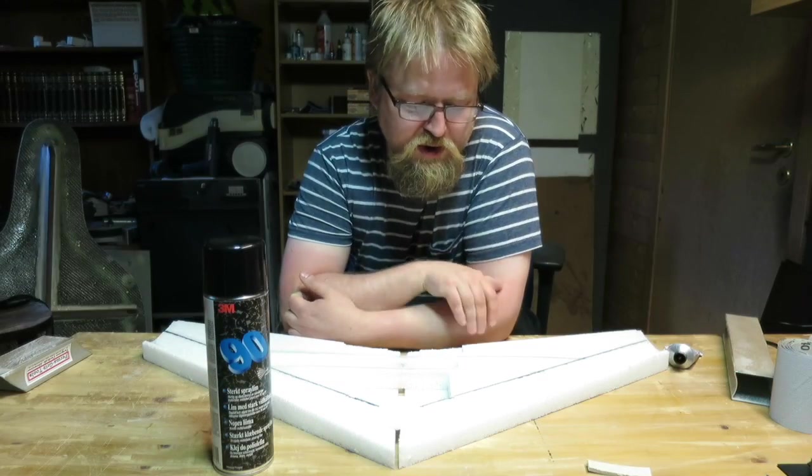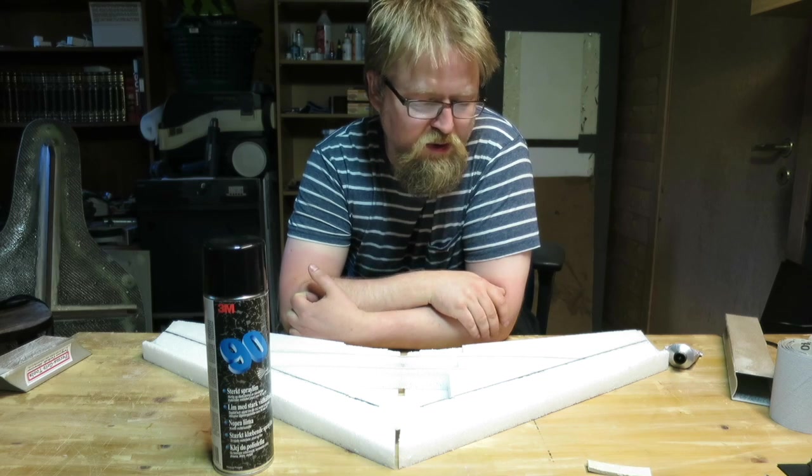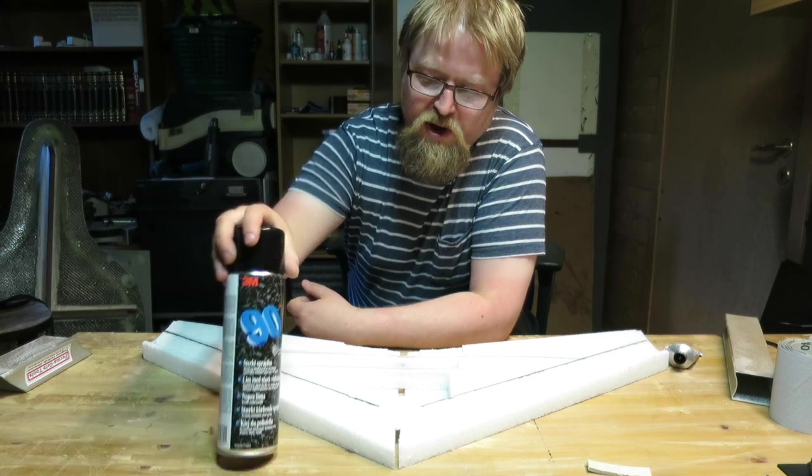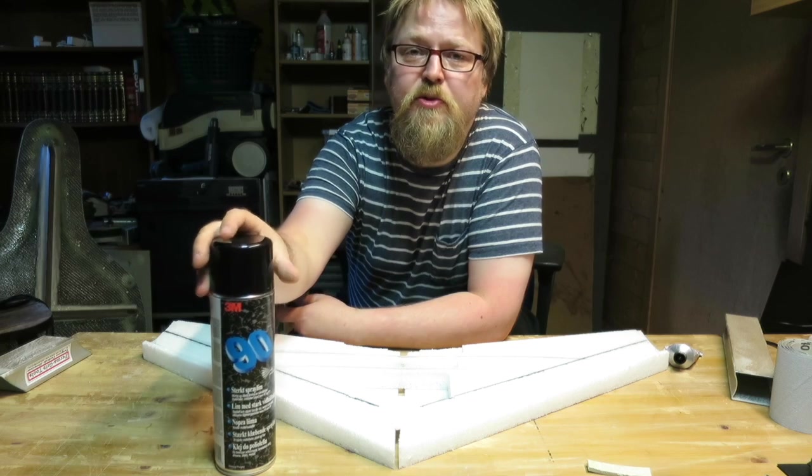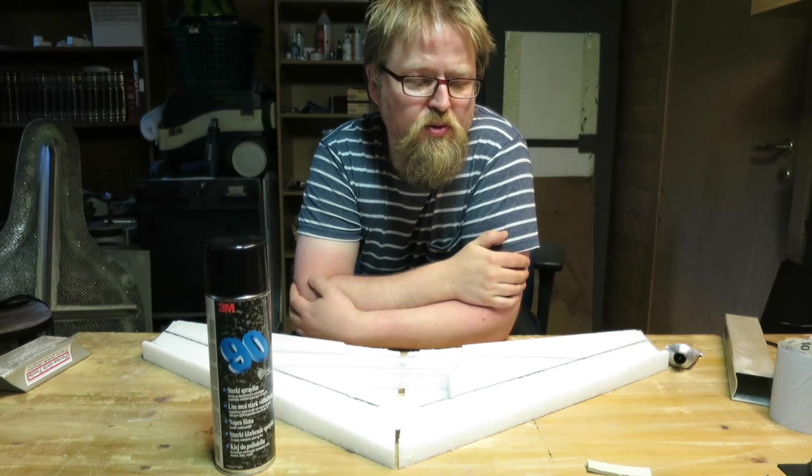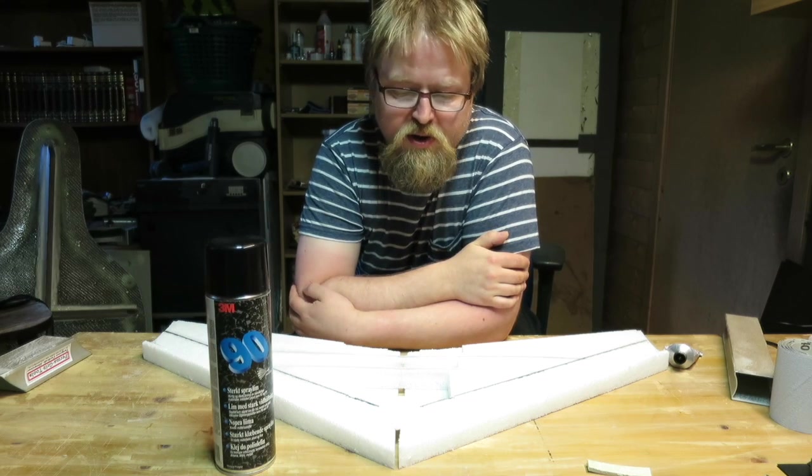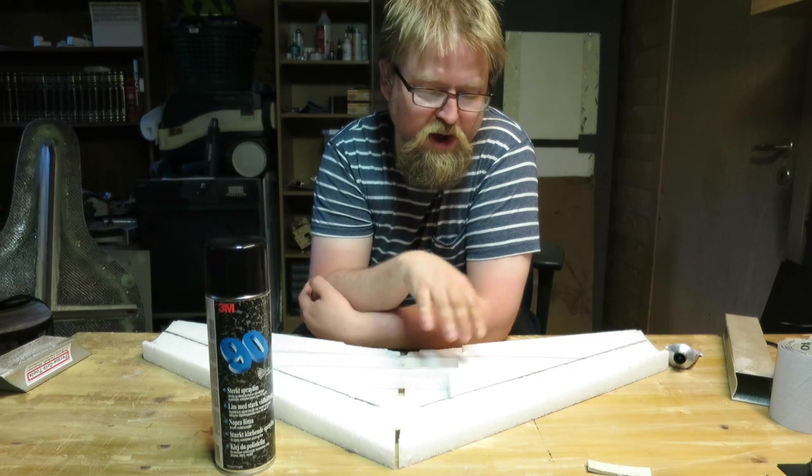This concludes the main assembly of the Hardcore 31. I will now use this 3M90 in generous amounts on both sides of the wing to help the laminate stick, and also of course do all the gear installation.